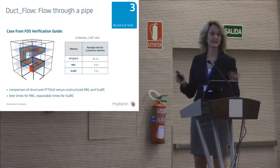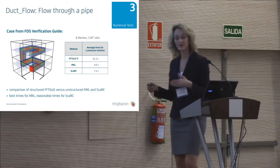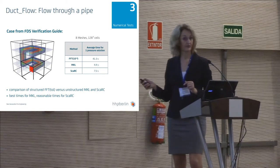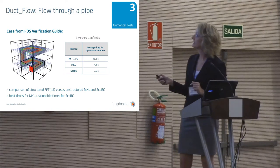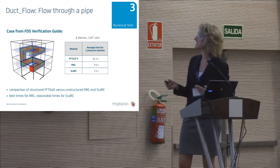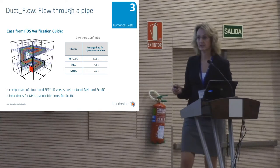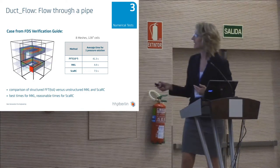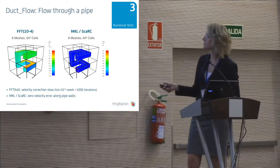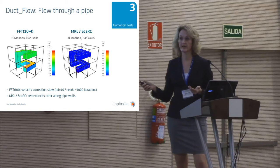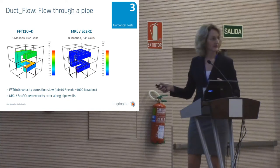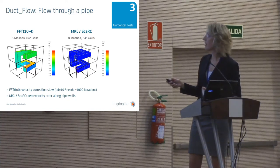We have seen two very simple cases. I also want to show that all those methods are able to compute more complex cases. This is the duct flow case from the verification guide — flow through a pipe. I compared structured FFT against unstructured MKL and unstructured SCARC. Again, MKL shows the best computing times, and FFT has trouble reaching a velocity tolerance of 10 to the minus 4 because it is really a hard test case, due to those many changes of direction.